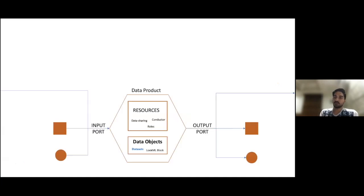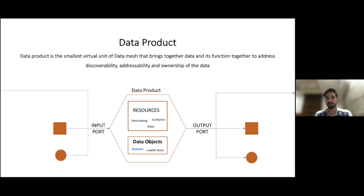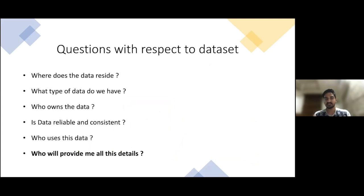A data product is the smallest virtual unit of data mesh. The aim of a data product is to bring together data and its related functions. This helps address discoverability, addressability, and ownership of the data. A dataset — which is tables and views that hold the data — is a very key component of a data product. When we talk about datasets, we have several questions: where does this data reside, what type of data do we have, who owns it, is it reliable and consistent, and who uses it? We need a service that provides all this information efficiently.